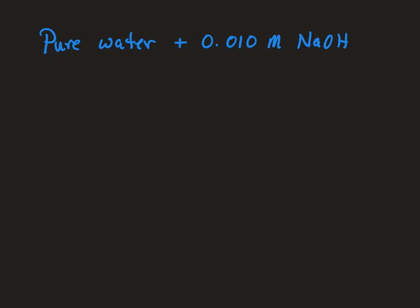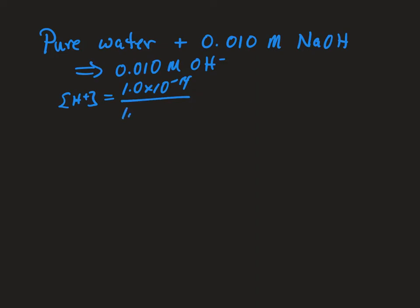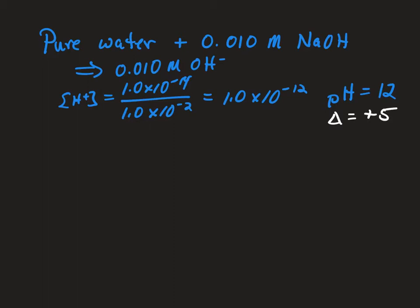Now let's look at pure water with 0.01 molar sodium hydroxide added. When we add sodium hydroxide it dissociates, resulting in 0.010 molar hydroxide ions. Taking KW divided by the hydroxide concentration gives 1.0 times 10 to the minus 12, making the pH 12. Since pure water started at 7, that's a change in pH of plus 5 pH units.